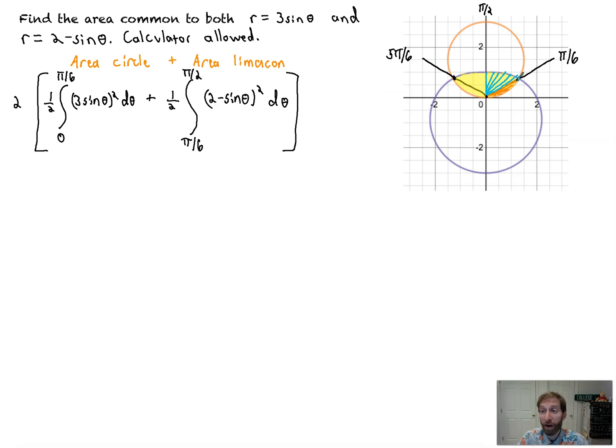You could find the area from pi over 6 to 5 pi over 6 of the lima song. And then the area from 0 to pi over 6 of the circle. And then from 5 pi over 6 to pi. But that's a lot of extra work. I'll be back to you in a jiffy with the answer from my calculator. And that is equal to 1.872 is what I get in my calculator. There we go. That's your final answer.